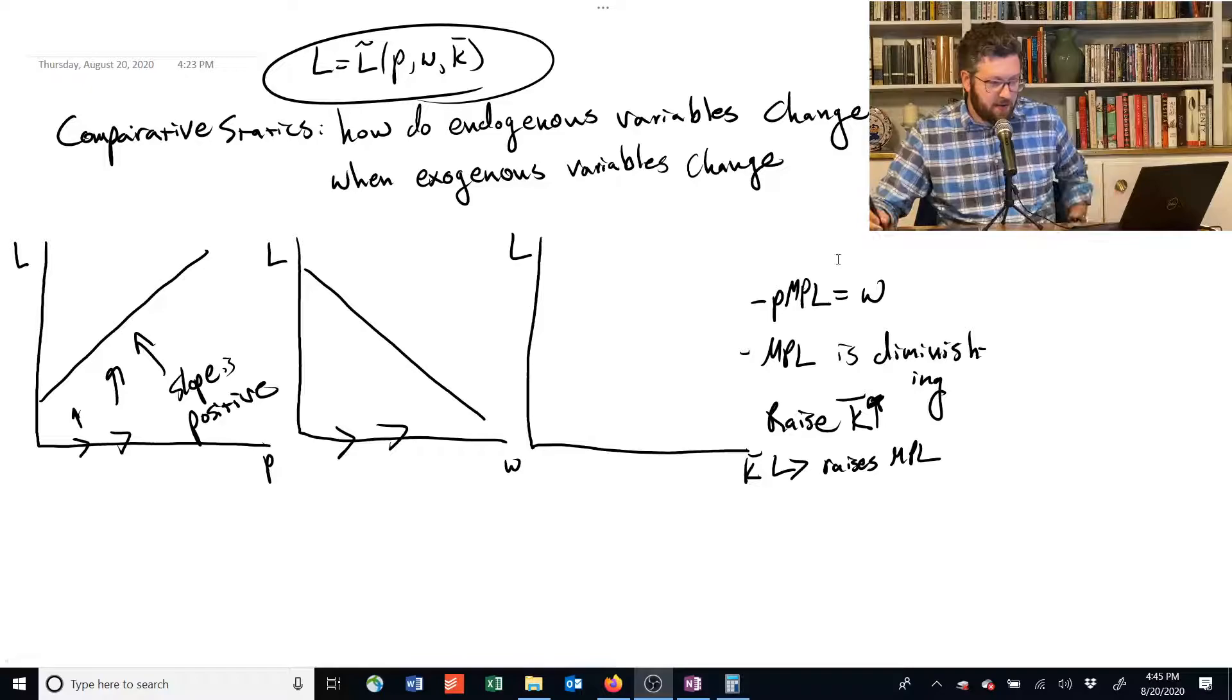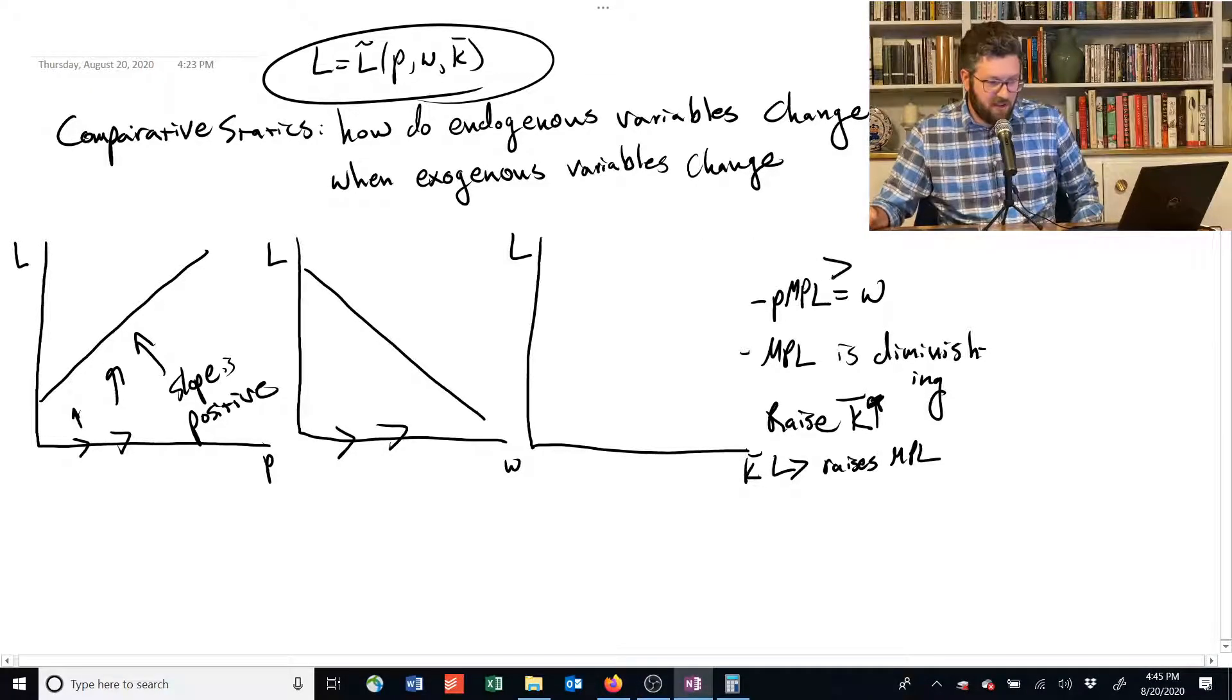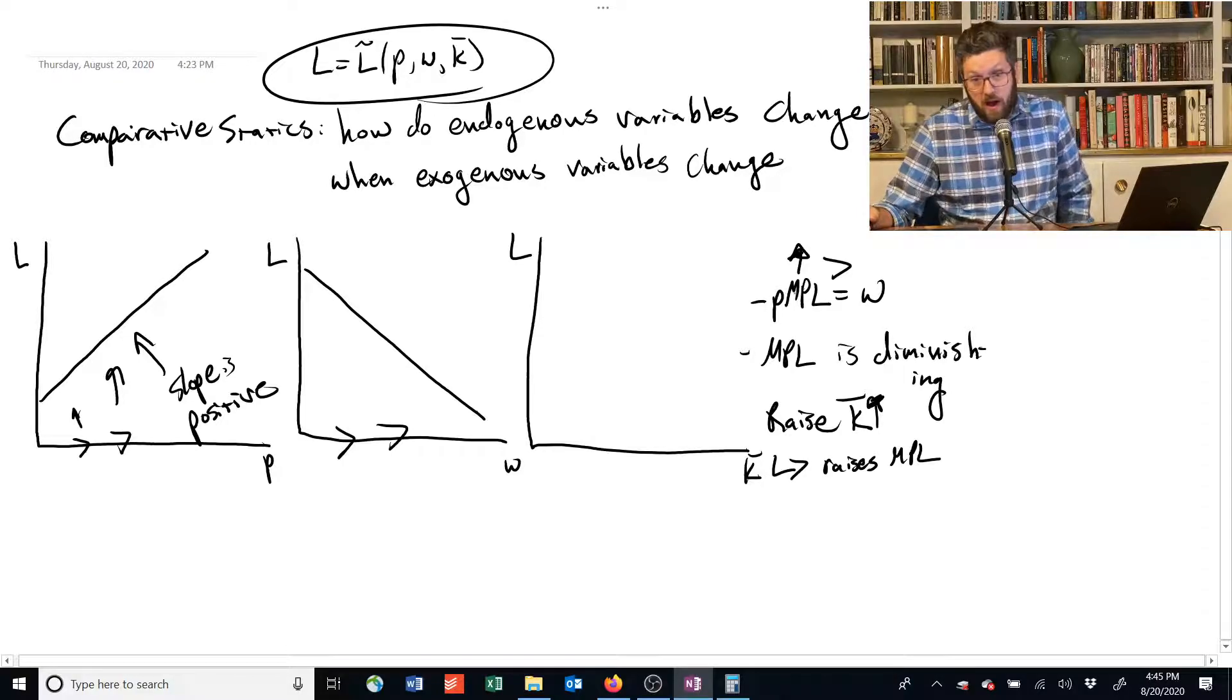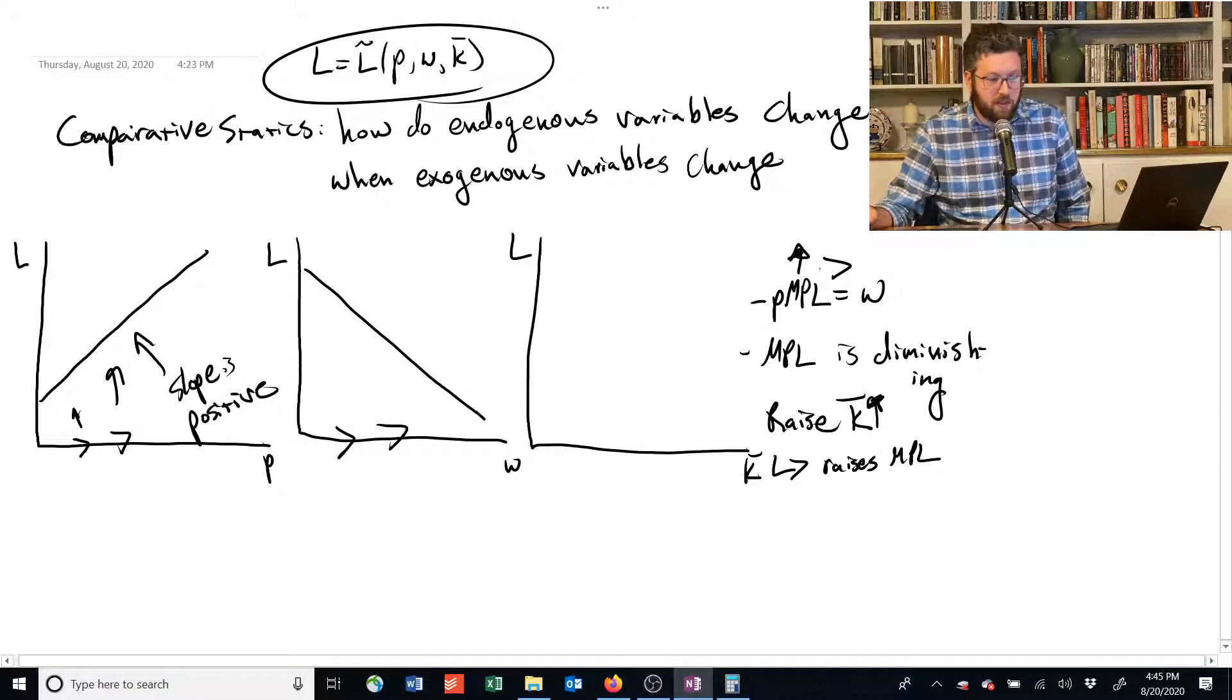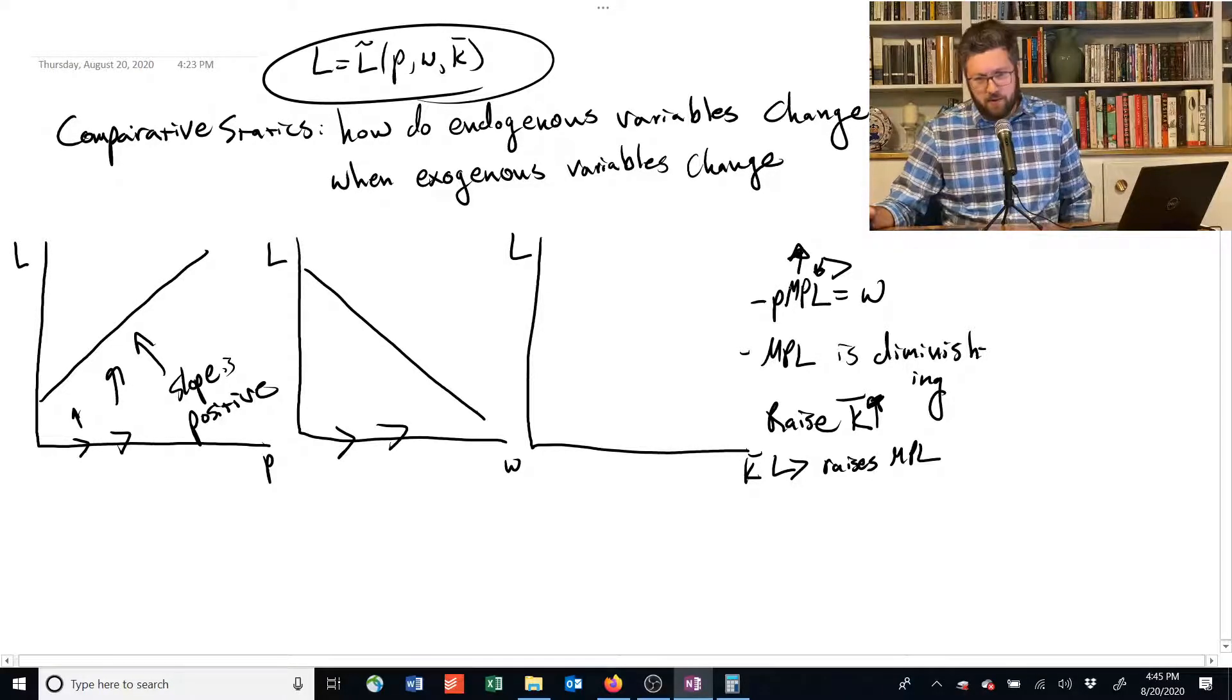Where, again, the left-hand side has increased, and so we would want to hire more laborers. As we hire more laborers, that pulls the marginal product of labor back down until we get to the point where it's equal again. So if we add capital,